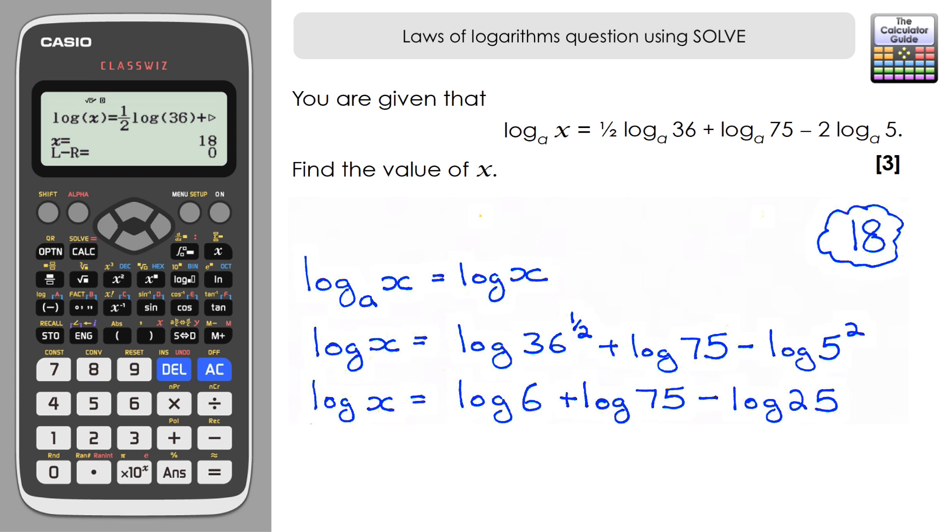I'm going to combine the second and third one. We have log 75 subtract log 25. The law is that I need to divide the first value by the second value - that's 75 divided by 25, which is 3 - so I can rewrite those last two as log of 3. What I've got so far is log x equals log 6 plus log 3. When we have two logarithms adding together, I'm going to multiply what's within them, so log of 6 times 3, which is 18. We've got log x equals log 18, and so from that we can deduce that x equals 18. That matches what I've got bubbled at the top from the ClassWiz solver.